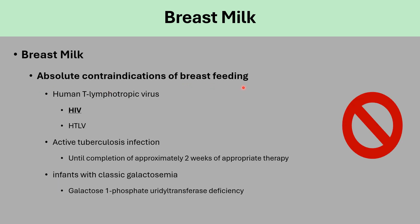Absolute contraindications of breastfeeding — the correct answer is almost always to continue breastfeeding, with only a few exceptions. If the mom is HIV positive, she cannot breastfeed, even if she's taking medication, regardless of viral load or other lab results. All HIV-positive mothers cannot breastfeed. Active tuberculosis: they can breastfeed after completion of approximately 2 weeks of appropriate therapy, but not before — this is only a short period.